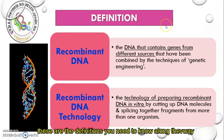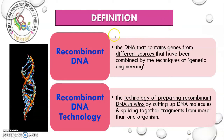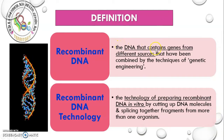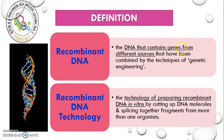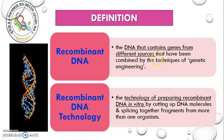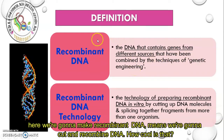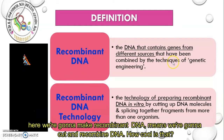These are the definitions you need to know along the way. Recombinant DNA is the DNA that contains genes from different sources that have been combined by the technique of genetic engineering. Here we're going to make recombinant DNA — meaning we're going to cut and recombine DNA.